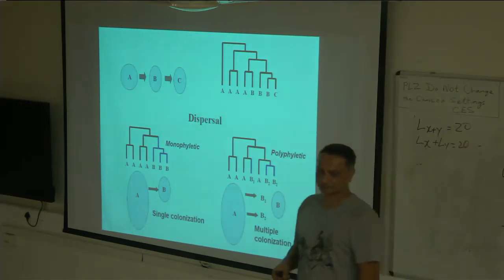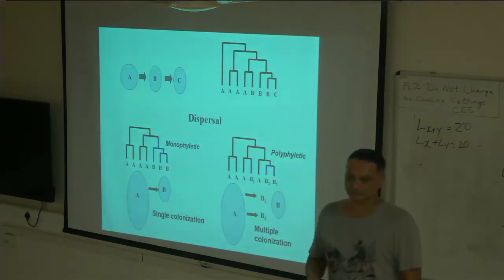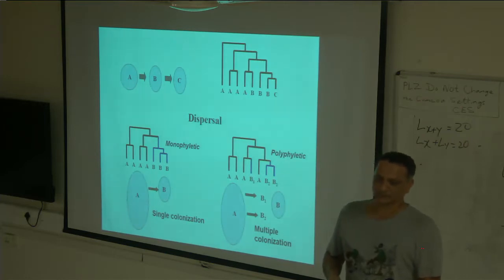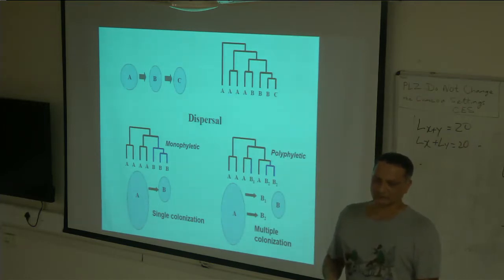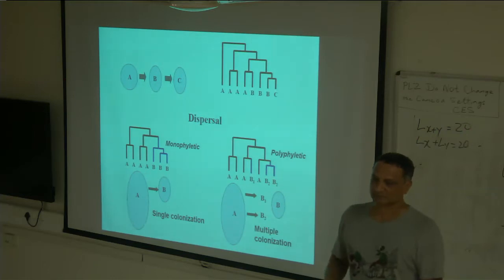To differentiate between ongoing hybridization and hybridization that occurred in the past, we should ideally rely on more markers and more sampling.